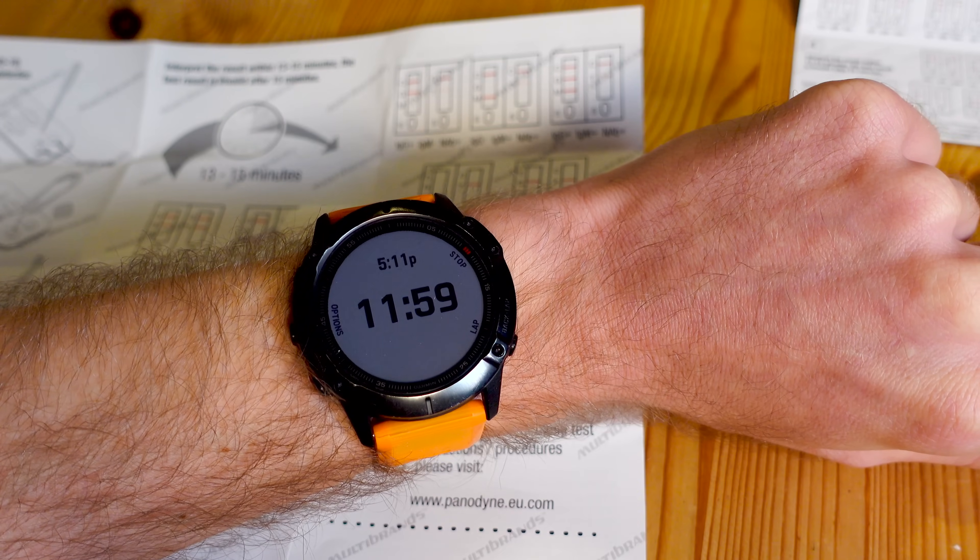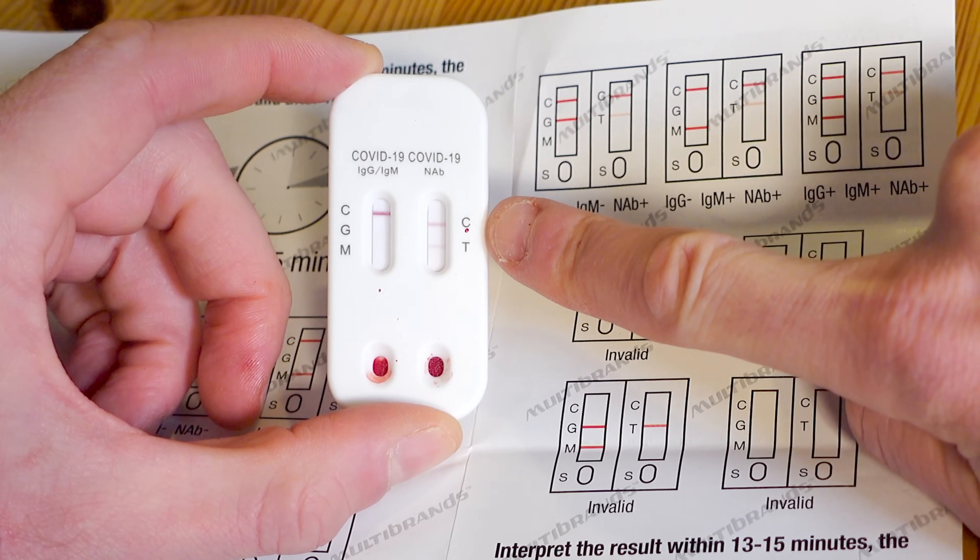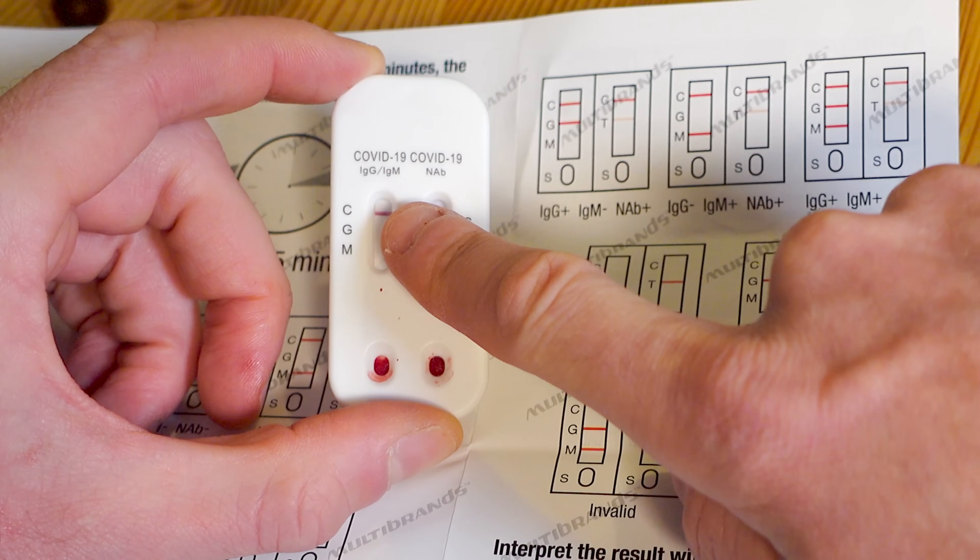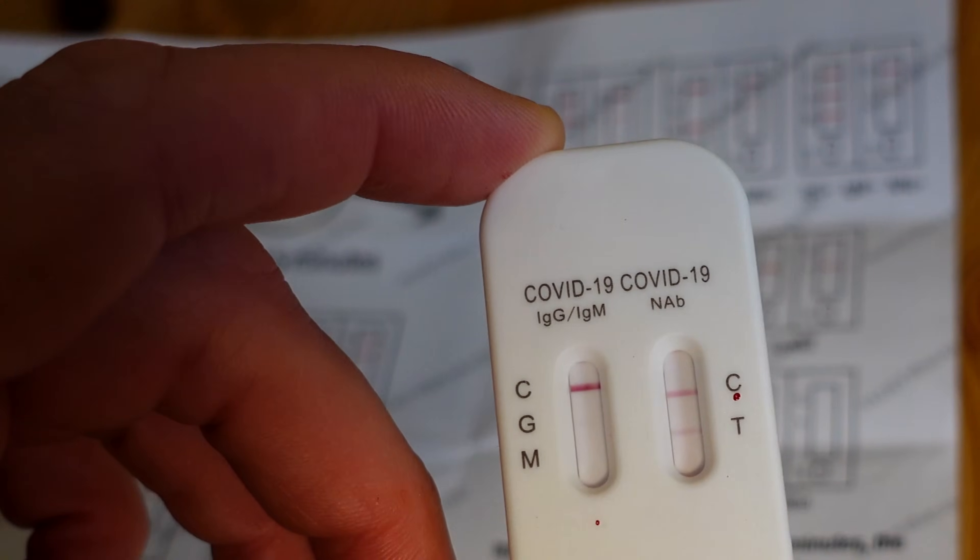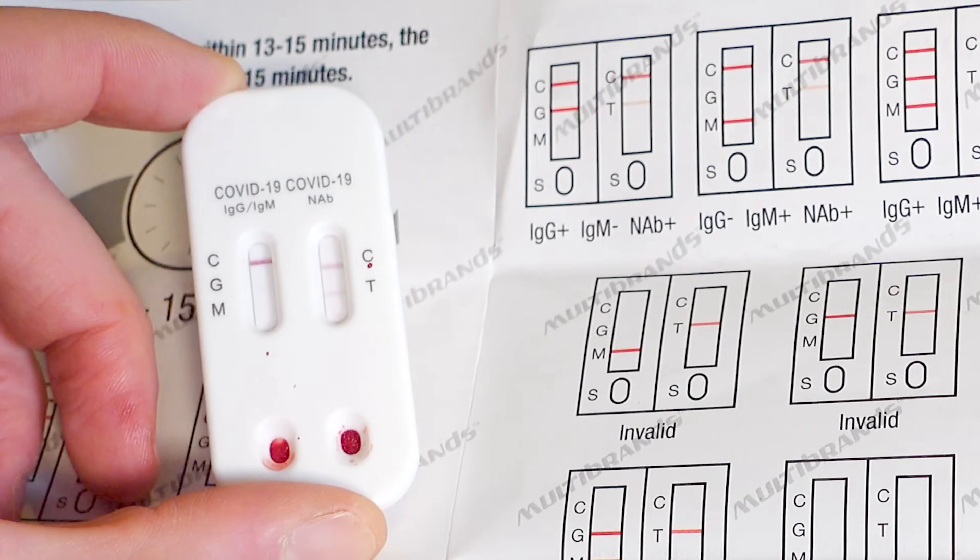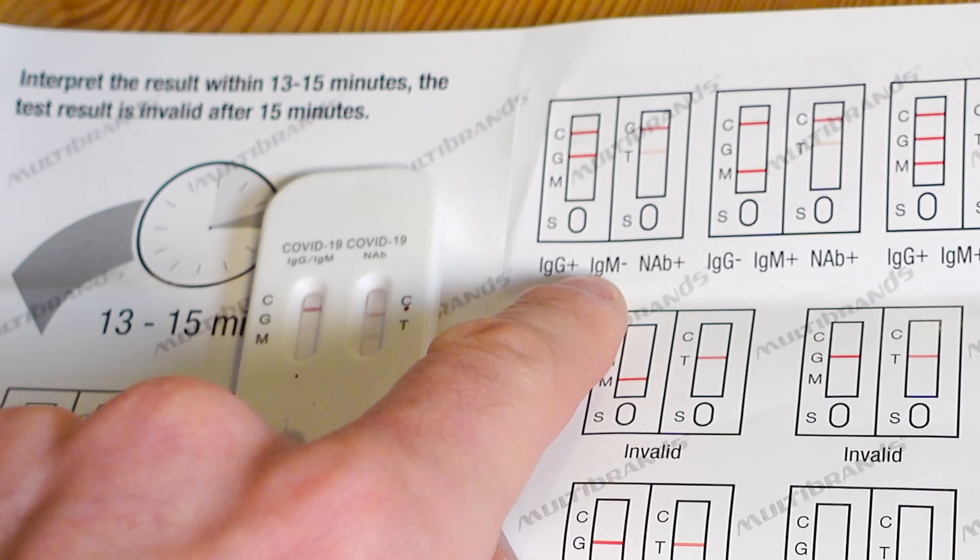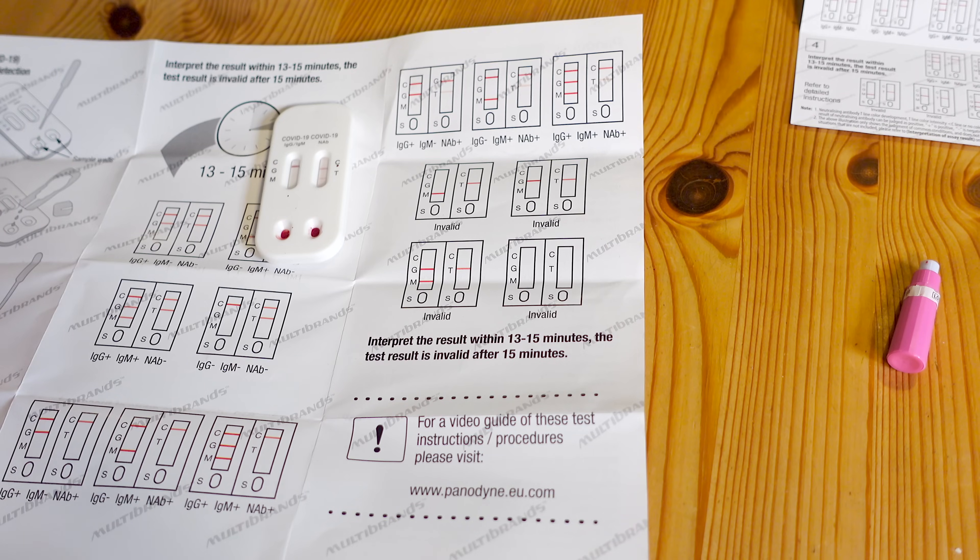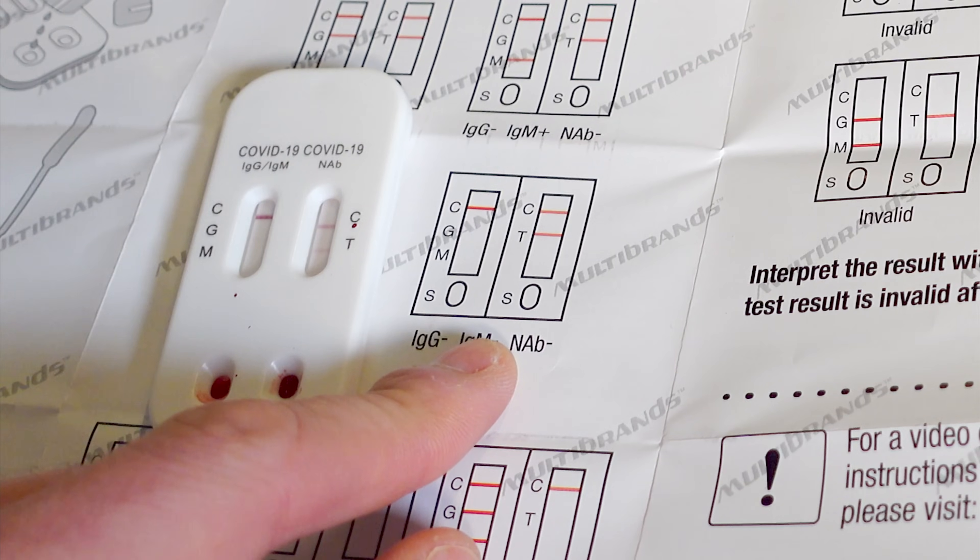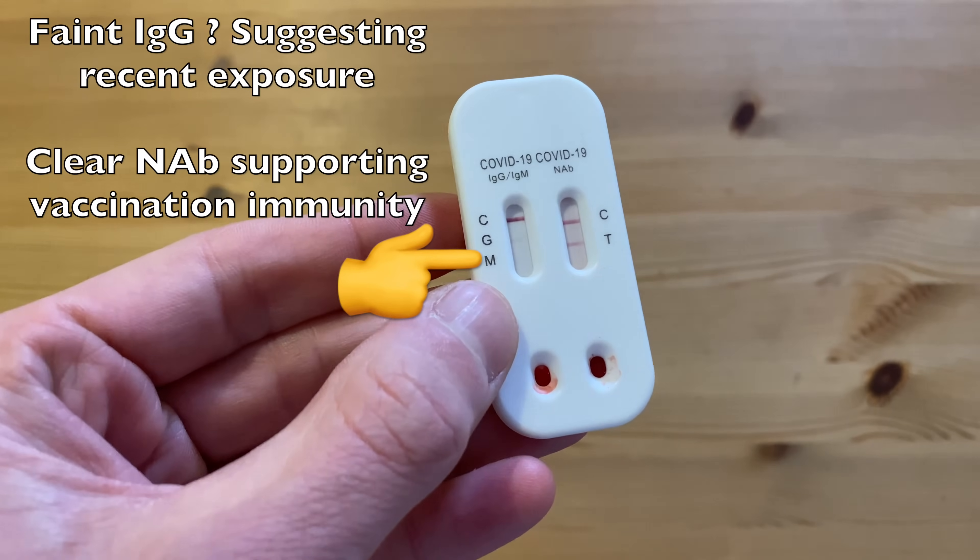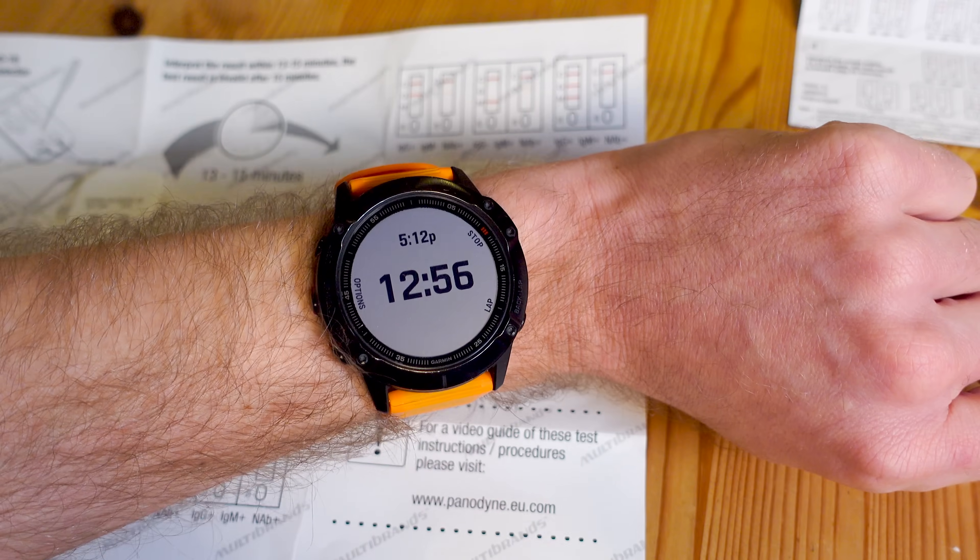OK, so we're 11 minutes 59 into it. So nearly there. And I've got definitely a positive C and a weak T there. And I've got a very strong C and a very faint G underneath it. I'm not sure if you can make that out there, but it is there. So to my mind, that is suggesting G positive, IgM negative and antibody positive. The other way of reading this would be everything negative, which would be a little bit unfortunate. I'd definitely say there's a very thin G coming out there, but it isn't strong, that's for sure. And that's 13 minutes in.